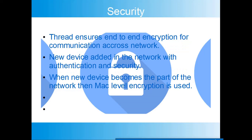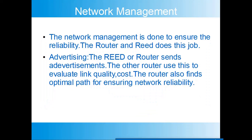Thread ensures end-to-end encryption for communication across the network. New devices are added to the network with authentication and security. When a new device becomes part of the network, MAC-level encryption is used for communication.